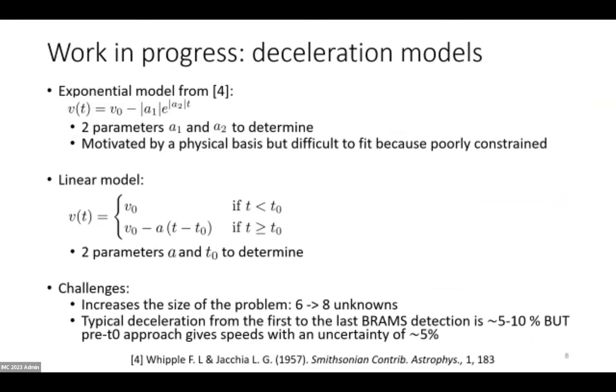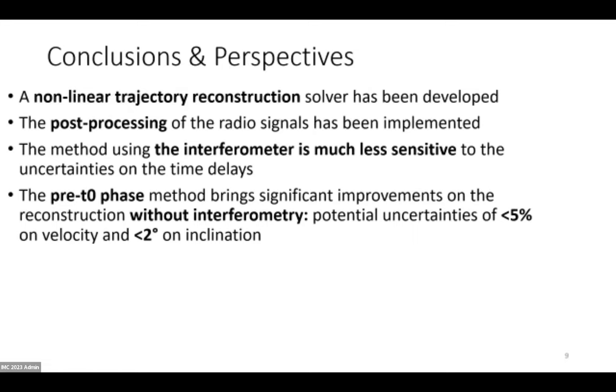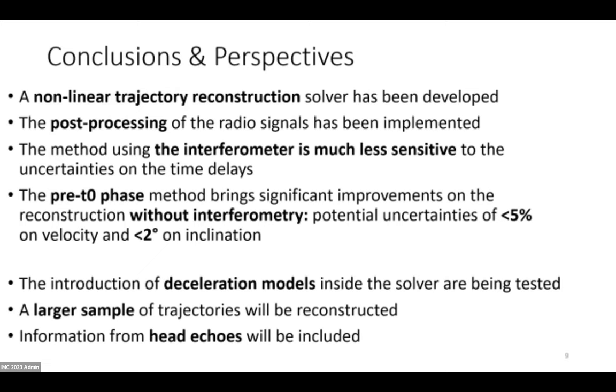The takeaway message here is that the pre-zero phase approach has been extended to forward scatter systems such as the BRAMS network, and it brings very good improvements. It's now applicable to retrieve trajectories of most meteors without the need to have interferometry, and we obtain uncertainties of less than five percent on the velocity and less than two degrees on the inclination. Now the challenge for the future is introducing deceleration models, studying more trajectories, comparing with more CAMS and GMN trajectories, and also including information from head echoes. Thank you very much for listening.